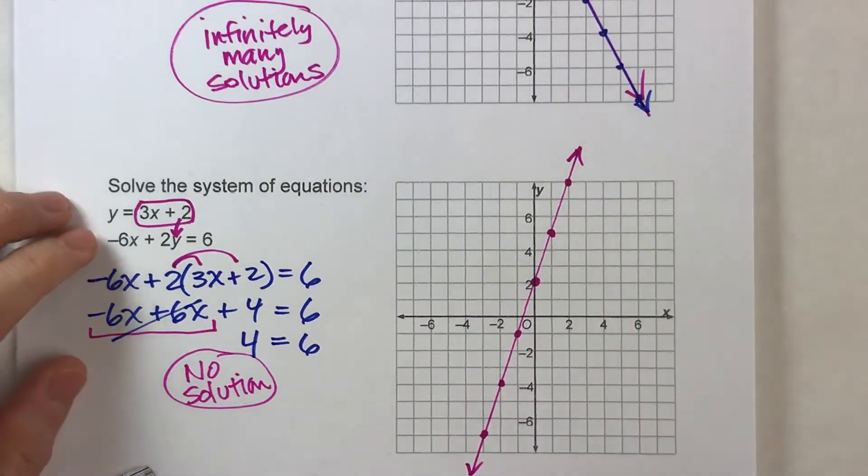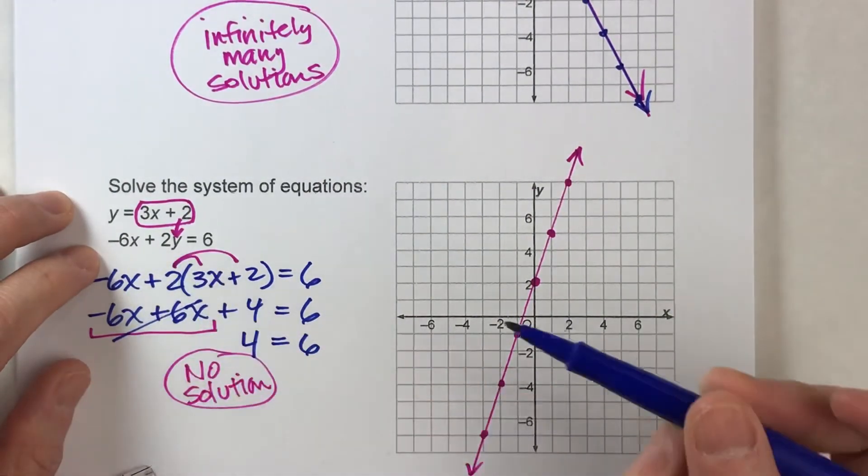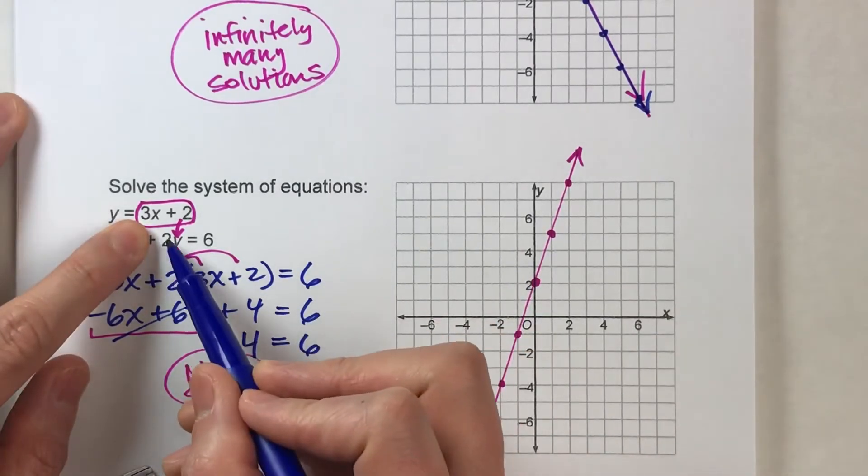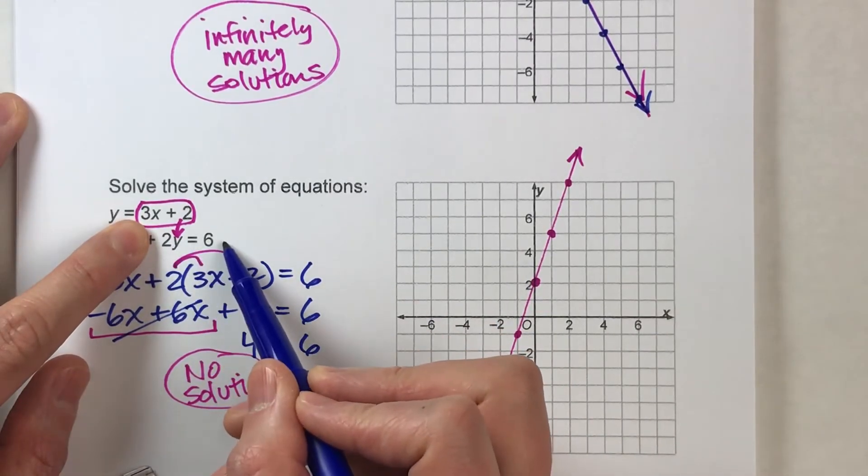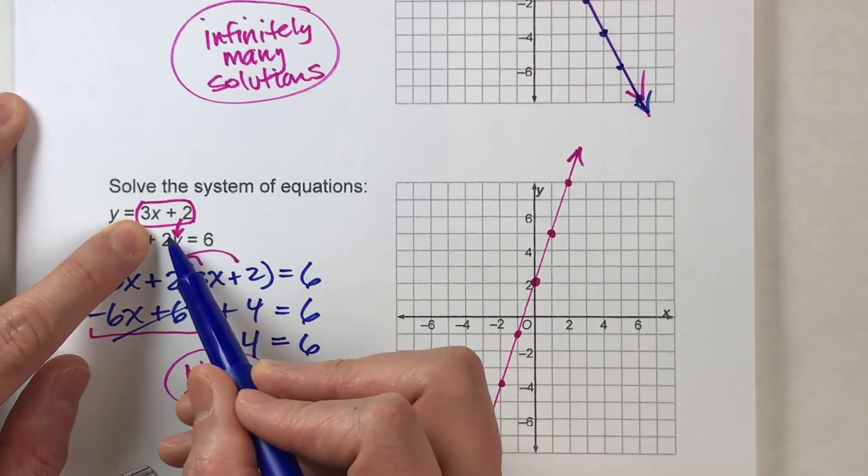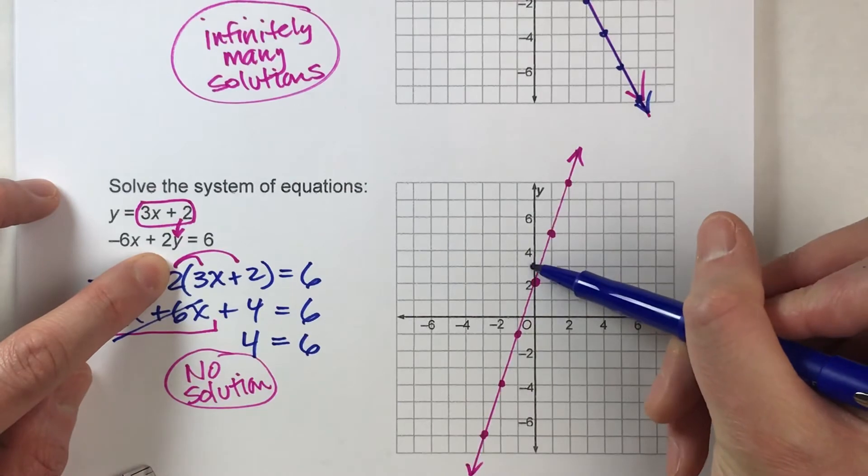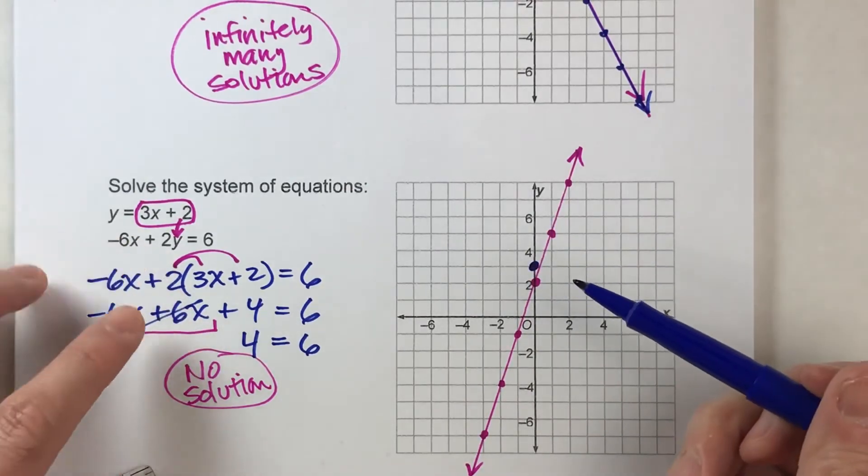Now for the second one, I've got it in standard form, so let's graph the intercepts. If x is 0, 2 times what will equal 6? Well, then y would have to be 3, because 2 times 3 is 6. So 0, 3 is my intercept.